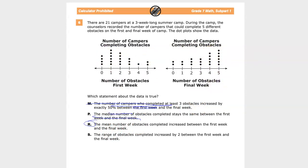The last one we've already talked about, how the mean shifted a lot. We don't have to figure out the exact number. It doesn't matter. That's not what they're asking. The range of obstacles completed increased by 2.